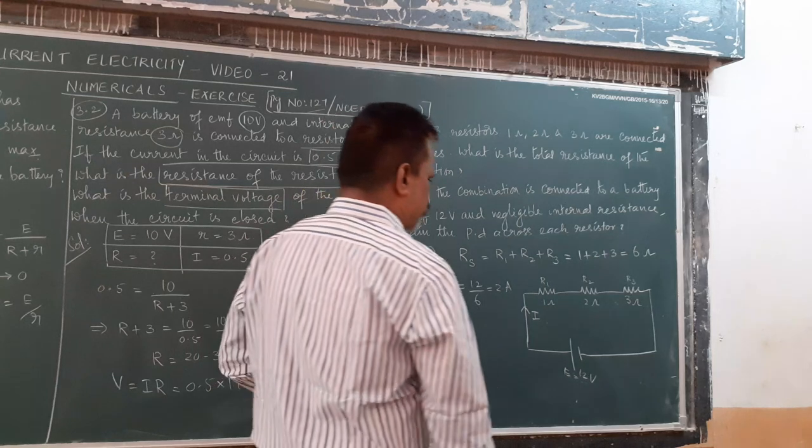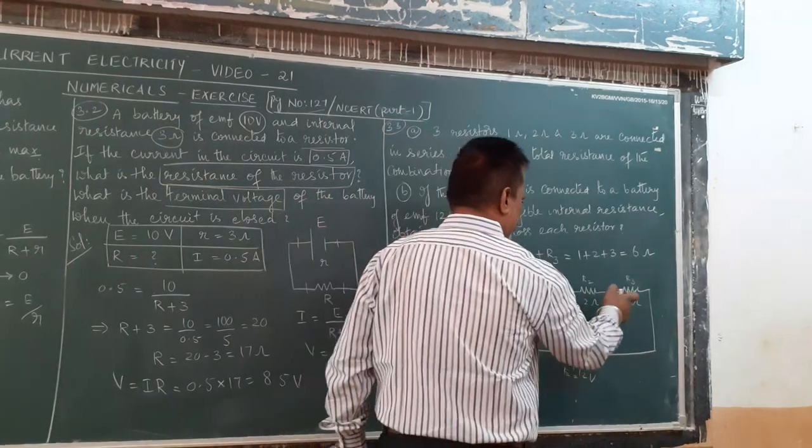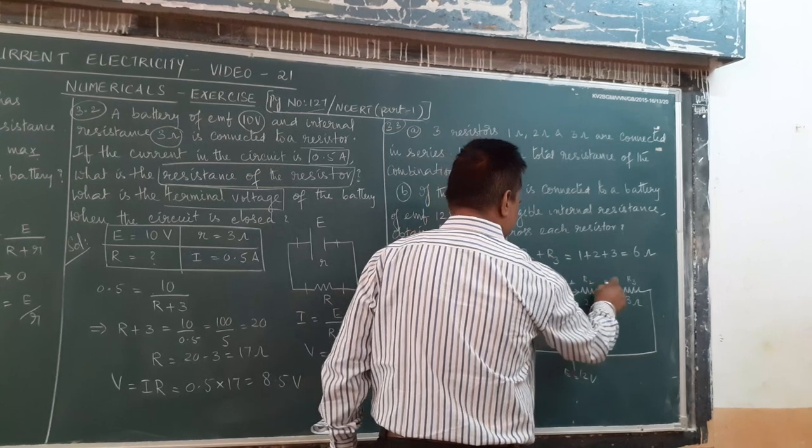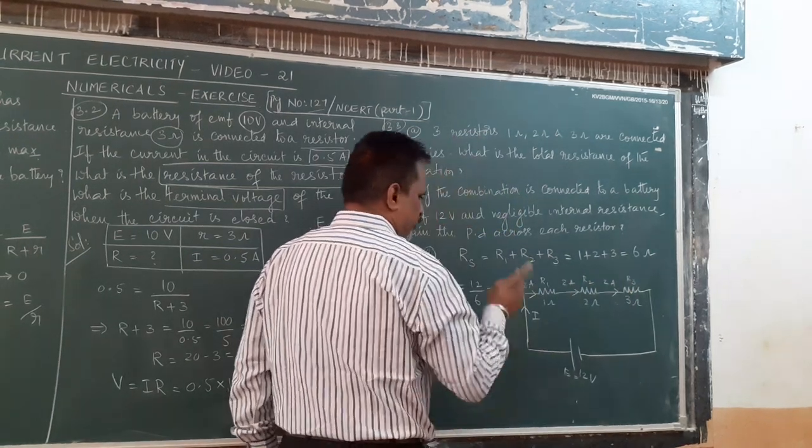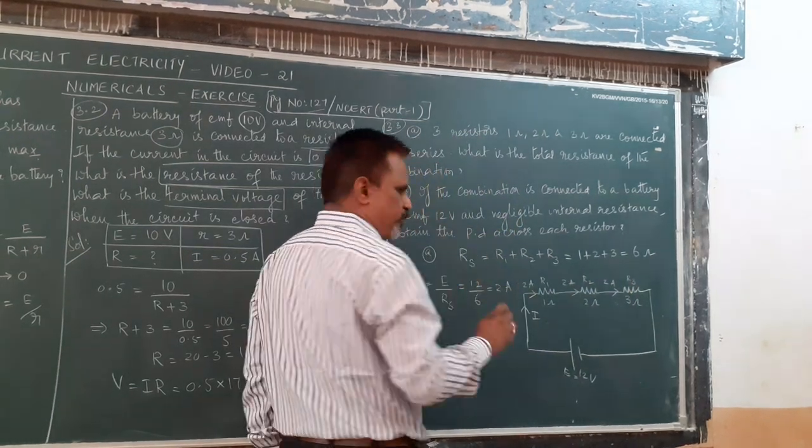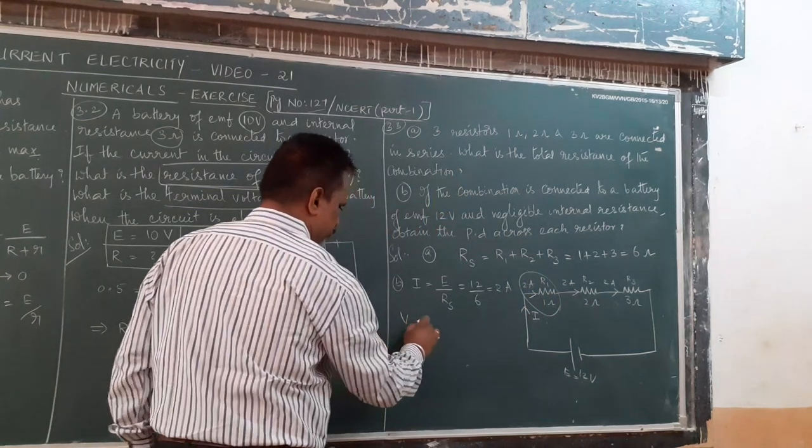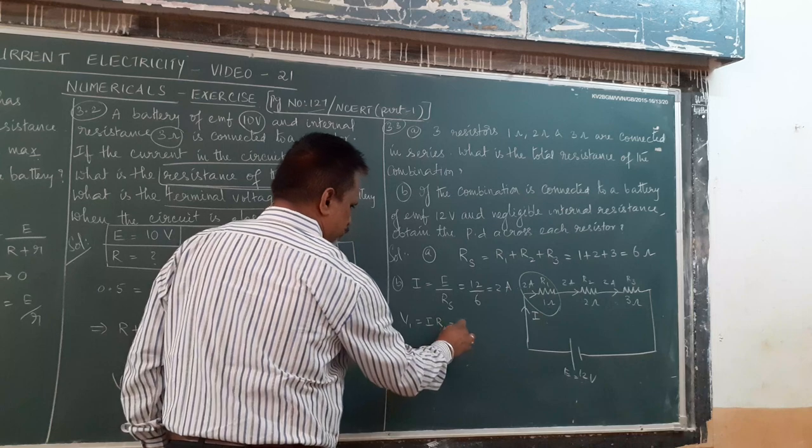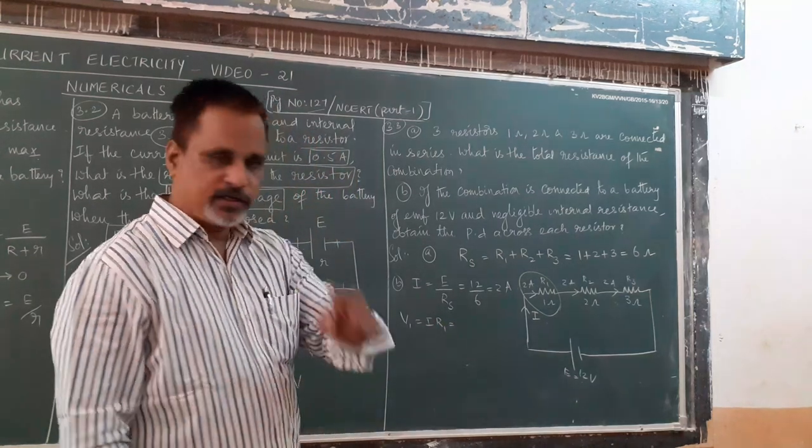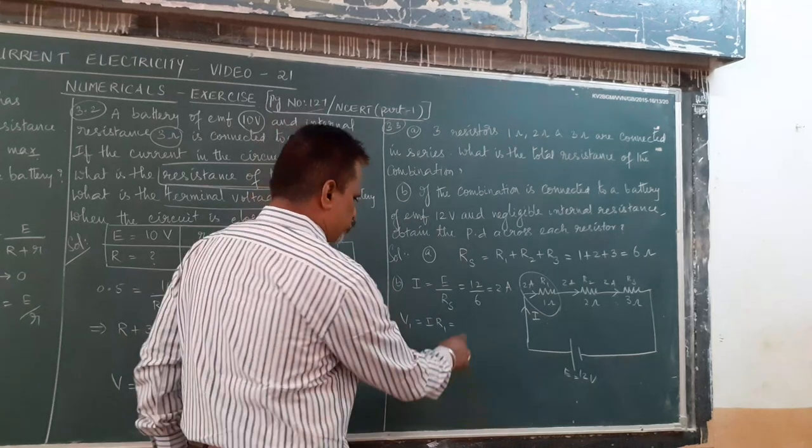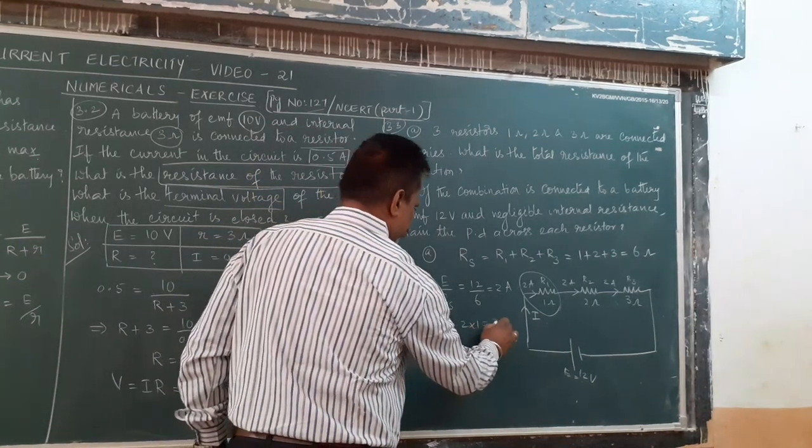Same 2 ampere current goes through 1 ohm, 2 ohm and 3 ohm. Now tell me, what is the potential drop across R1? V equal to IR. I is 2 ampere, R1 is 1 ohm, so 2 into 1 equals 2 volt.